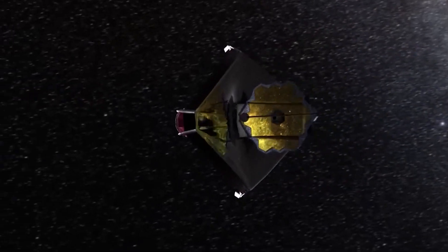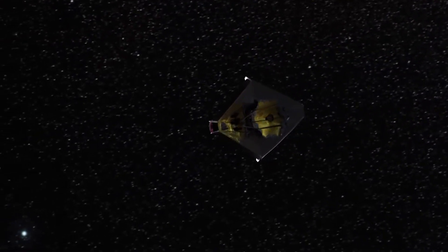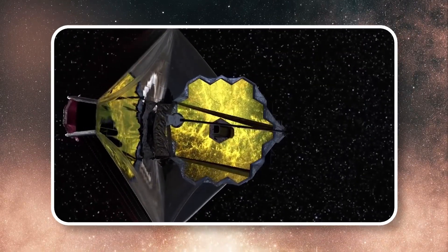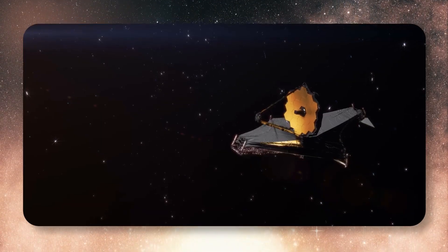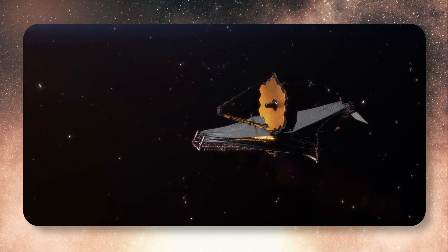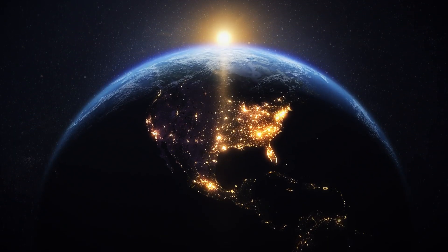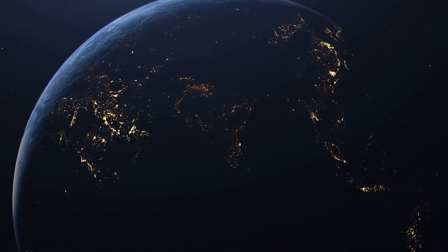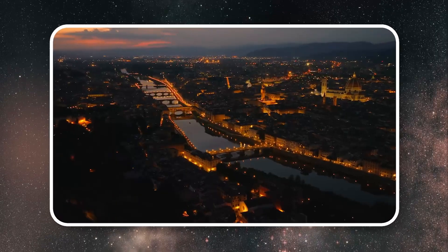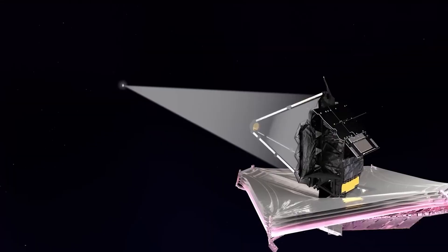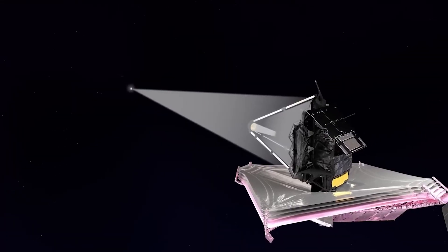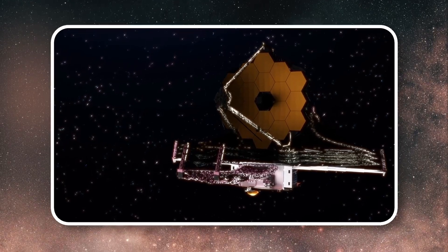The James Webb Space Telescope isn't your average telescope. It's an infrared powerhouse, meaning it can see things even when it's pitch black. And that's exactly what it did on this planet. It captured faint glimmers of light, even on the dark side of the planet. Webb's sensors are sharp enough to spot that difference.